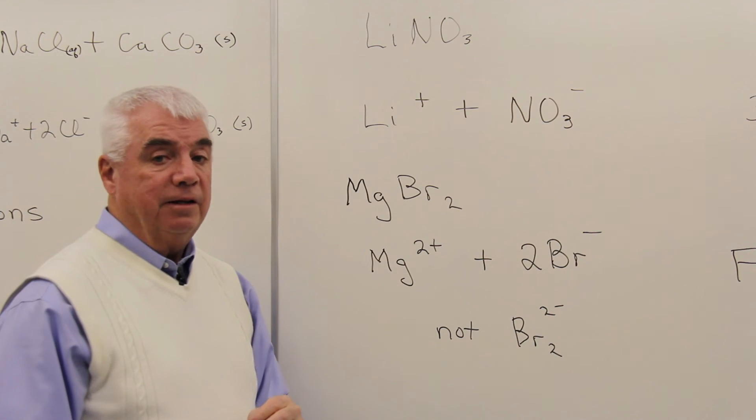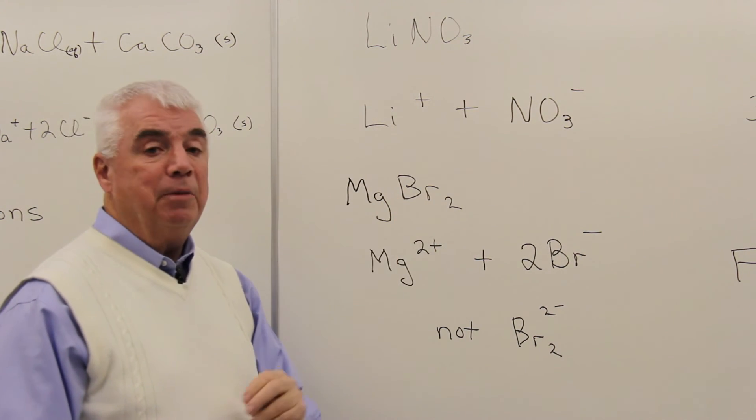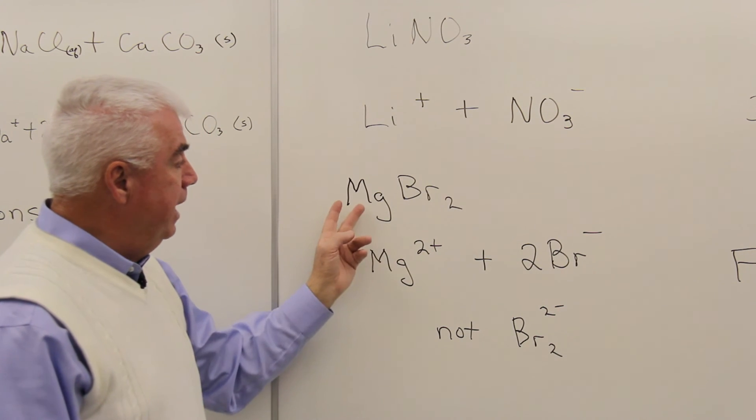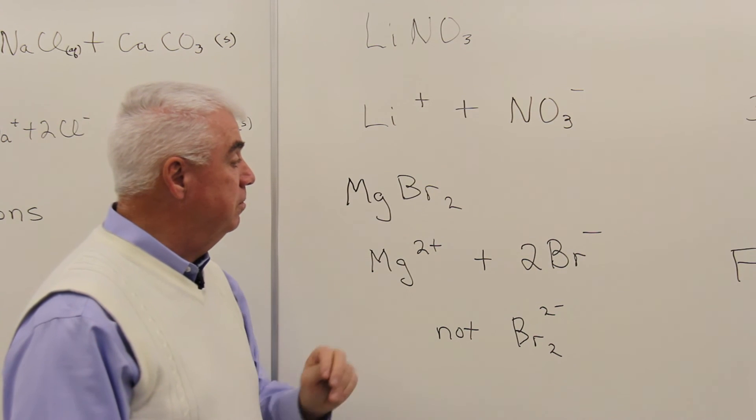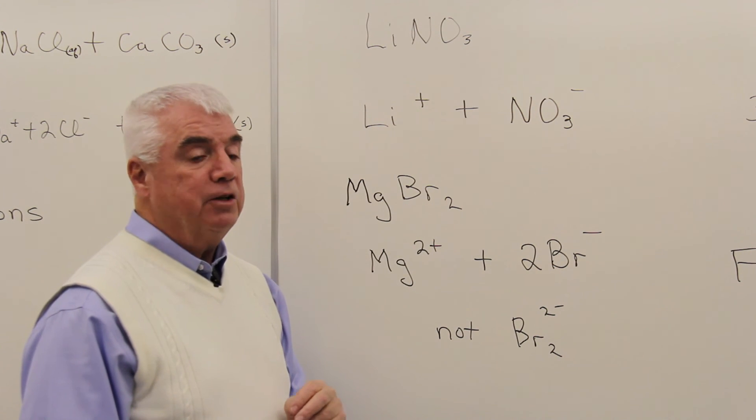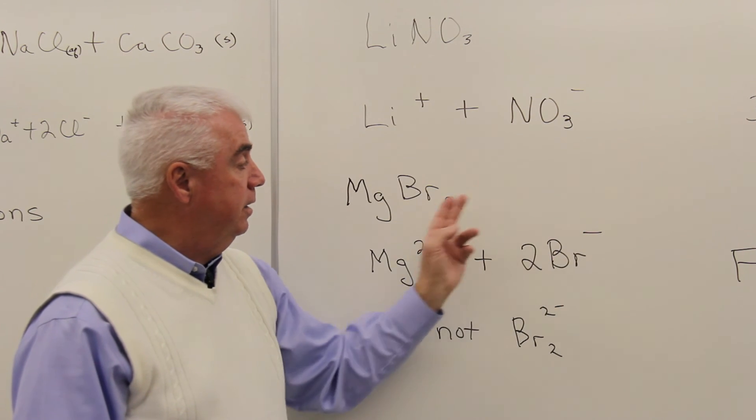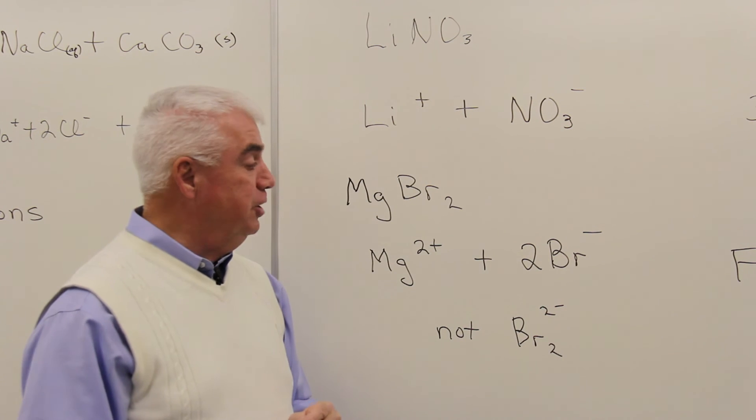Magnesium bromide would be an ionic compound. We see a metal in combination with a nonmetal. Magnesium is in group 2A. It likes to form a 2 plus. Bromine is in 7A. It likes to form a minus 1. Subscript tells us that there are two of those, so the subscript becomes a coefficient.